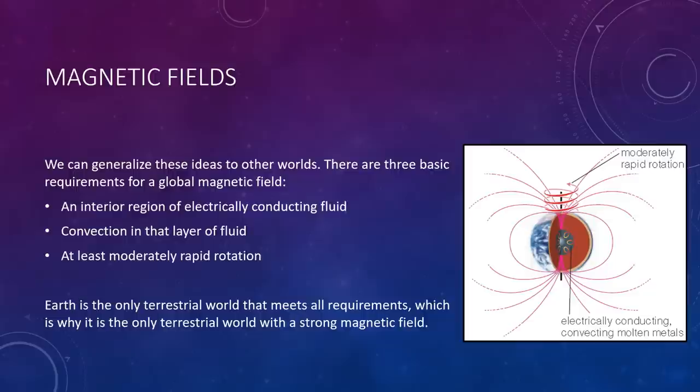The Moon has no magnetic field, presumably because its core has long since cooled and ceased convecting. Mars' core probably still retains some heat, but not enough to drive core convection, which is why it also lacks a magnetic field today. Venus probably has a molten core layer much like that of Earth, but either its convection or its 243-day rotation period is too slow to actually generate that magnetic field.